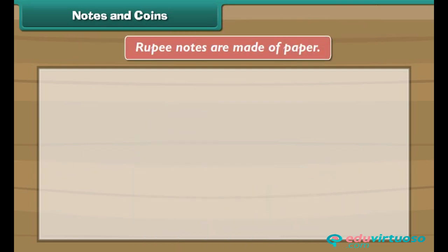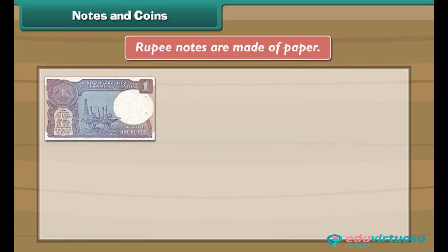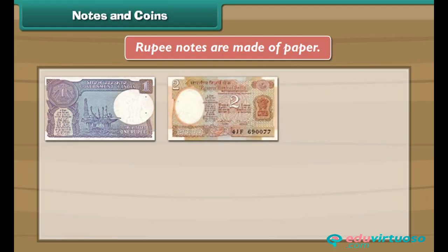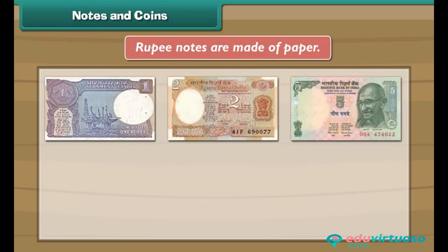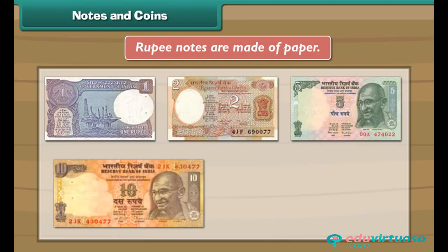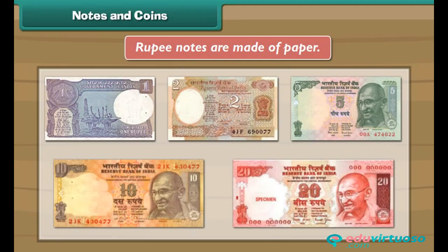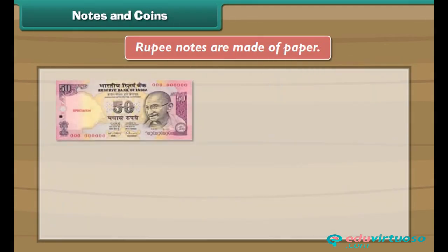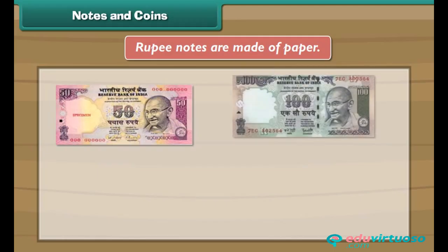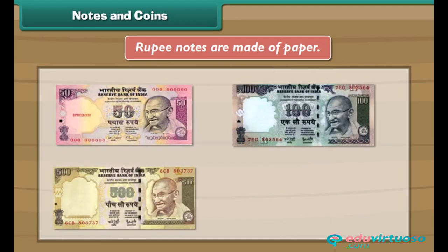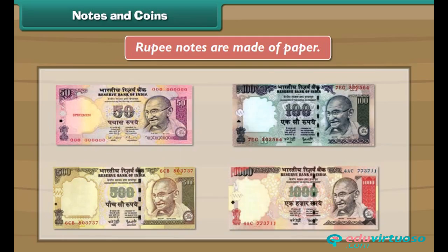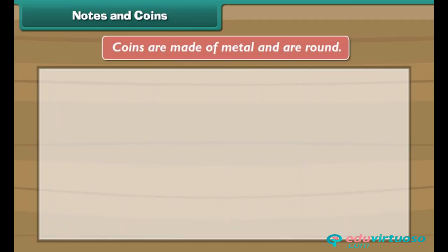Rupee notes are made of paper. There are 1, 2, 5, 10, 20, 50, 100, 500, and 1000 rupee notes. Coins are made of metal and are round.